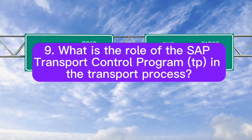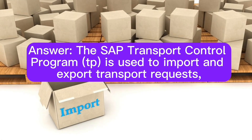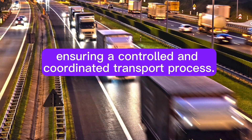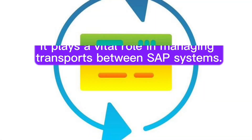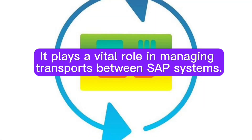Question 9: What is the role of the SAP transport control program TP in the transport process? The SAP transport control program TP is used to import and export transport requests, ensuring a controlled and coordinated transport process. It plays a vital role in managing transports between SAP systems.